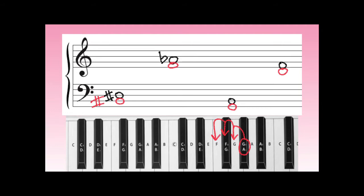Let's count three half-steps down from a B in the bass clef: one, two, three. We see that we've circled G-sharp/A-flat on the keyboard, but we need to spell it as a G-sharp in order for it to be the correct answer. A minor third below B is a G-sharp.